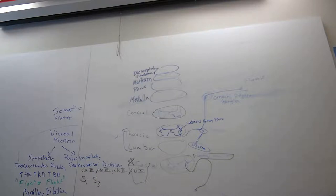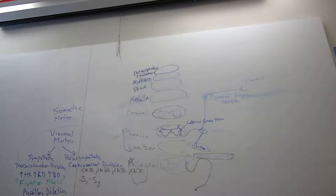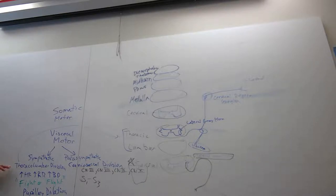They're training themselves to be in fight-or-flight response regularly so that when they're in the true fight-or-flight response it doesn't affect them psychologically. That's what we're talking about — the brain and all the stuff that can impact it. So, parasympathetic — craniosacral division.